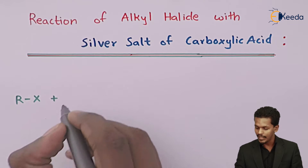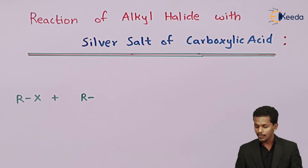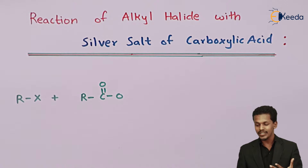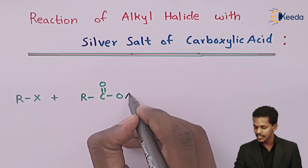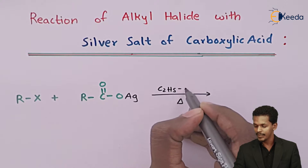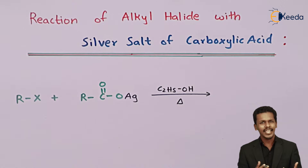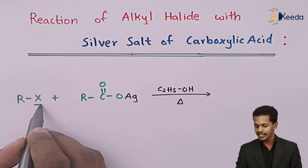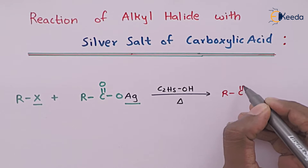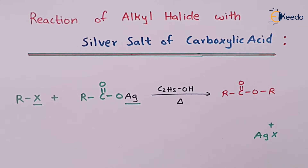The carboxylic acid is represented as RC(=O)OH, but since we are using the silver salt of carboxylic acid, the silver replaces the hydrogen. This happens in an ethanol solution (C₂H₅OH as solvent). A substitution reaction takes place where the X of the alkyl halide reacts with the silver atom, producing AgX as a byproduct, and the main product obtained is RC(=O)OR′, which is an ester.